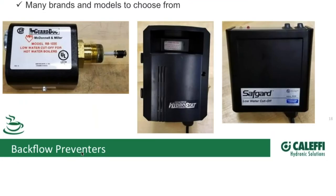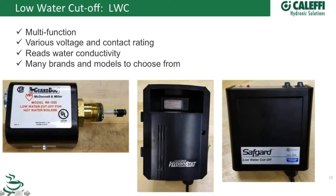One important thing on low water cutoff switches is where you put this. It's usually going to be installed at the highest point in the piping system. If you come out of the top of a ModCon boiler, for example, you want to put this up above the highest point in that piping so that as soon as the water starts to leave that point, you detect it. Obviously don't put it below the boiler or on the side, because you could leak enough water out of the system and still have a dry fire condition. Follow the installation instructions that come with these devices.